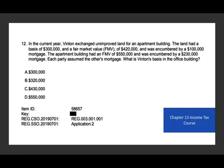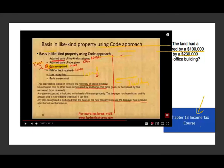Let's take a look at the next question, from Chapter 13. In the current year, V exchanged unimproved land for an apartment building. The land had a basis of $300,000, a fair market value of $420,000, and was encumbered by a $100,000 mortgage. The apartment building had a fair market value of $550,000 and was encumbered by a $230,000 mortgage. Each party assumed the other's mortgage. What is V's basis in the apartment building?